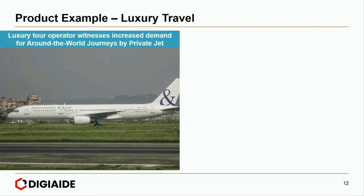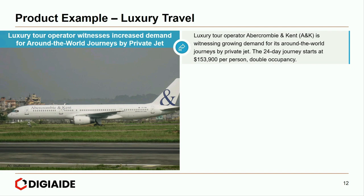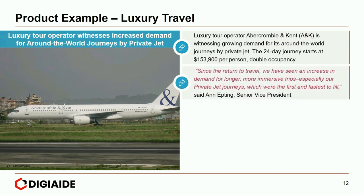Moving on to some examples under product. The first being luxury travel. Luxury tour operator Abercrombie and Kent is witnessing growing demand for its around-the-world journeys by private jet. A 24-day journey starts at a ballpark $154,000 per person in double occupancy. As stated by the senior vice president, since the return to travel, they have seen an increase in demand for longer, more immersive trips, especially private jet journeys, which were the first and fastest to fill.